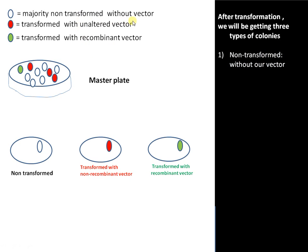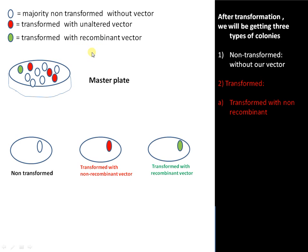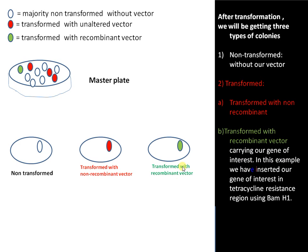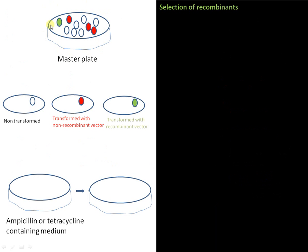These selectable markers help us select transformed colonies once the transformation experiment is complete. We get three types of colonies: first, the majority — non-transformed, without a vector; second, transformed with an unaltered vector introduced into the bacterium but without our gene of interest; and third, transformed with recombinant vector — the colonies we need to select. This is a tedious process as the recombinant colonies will always be very few.